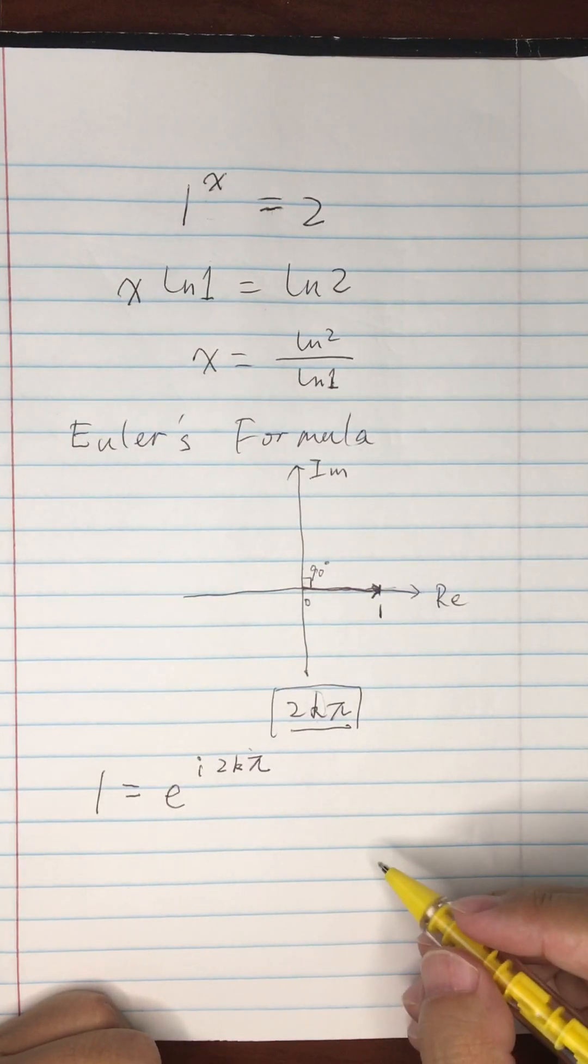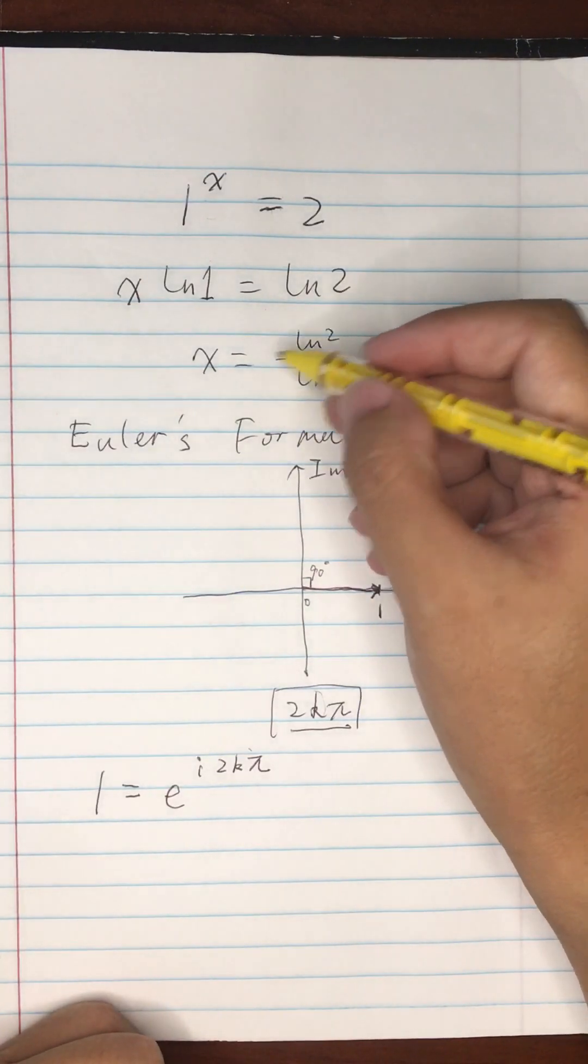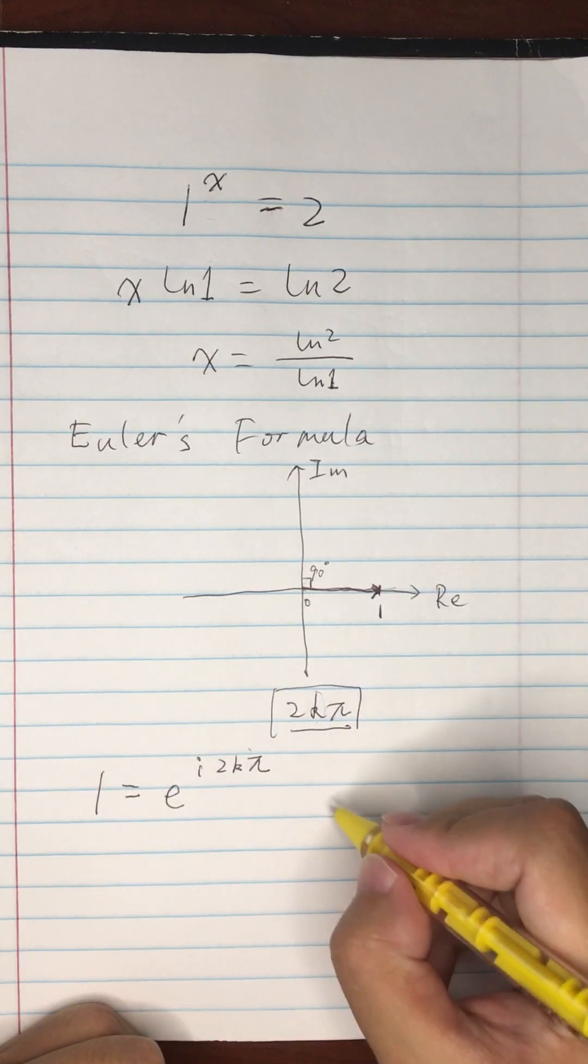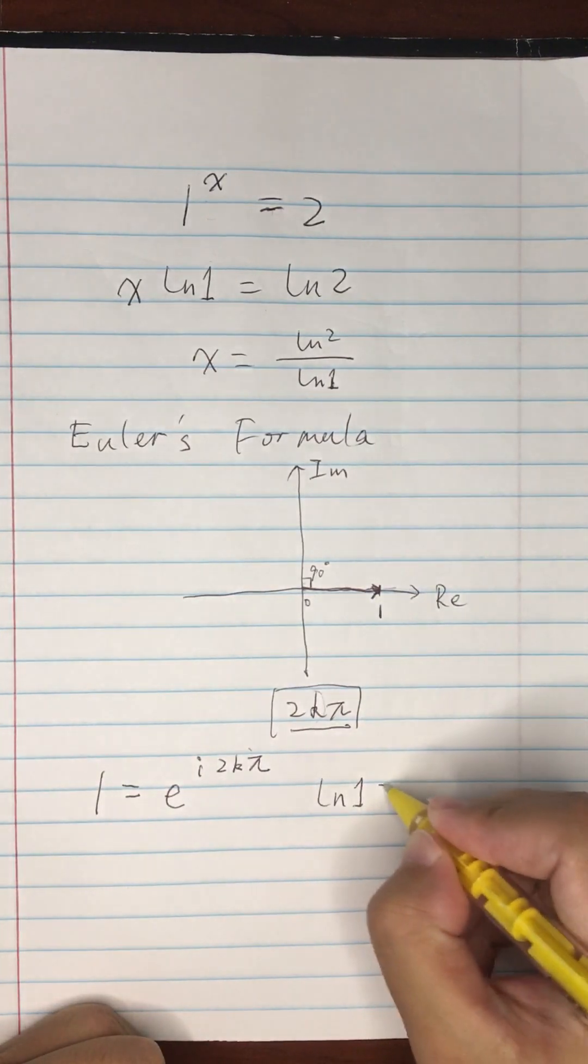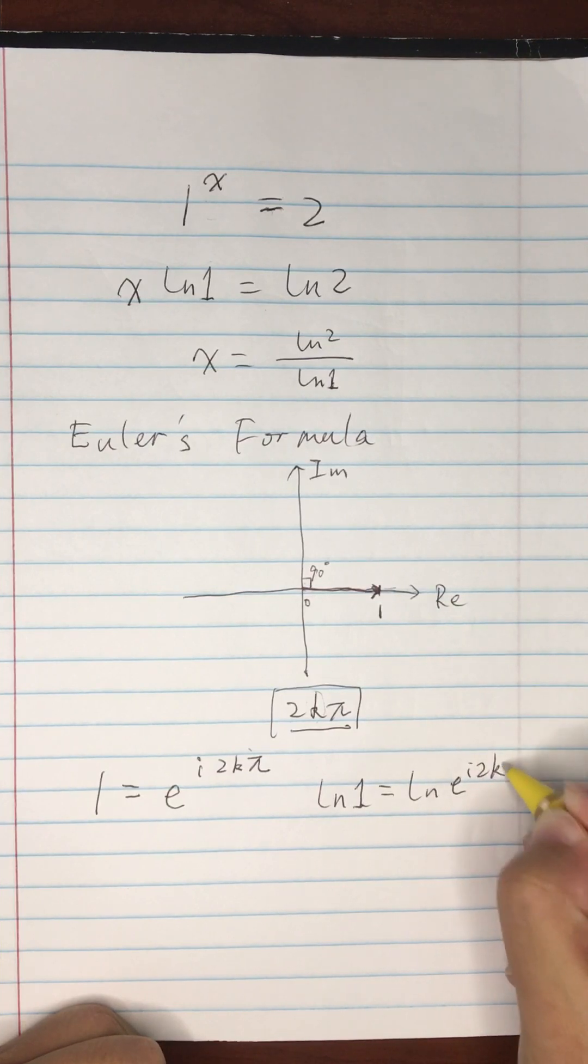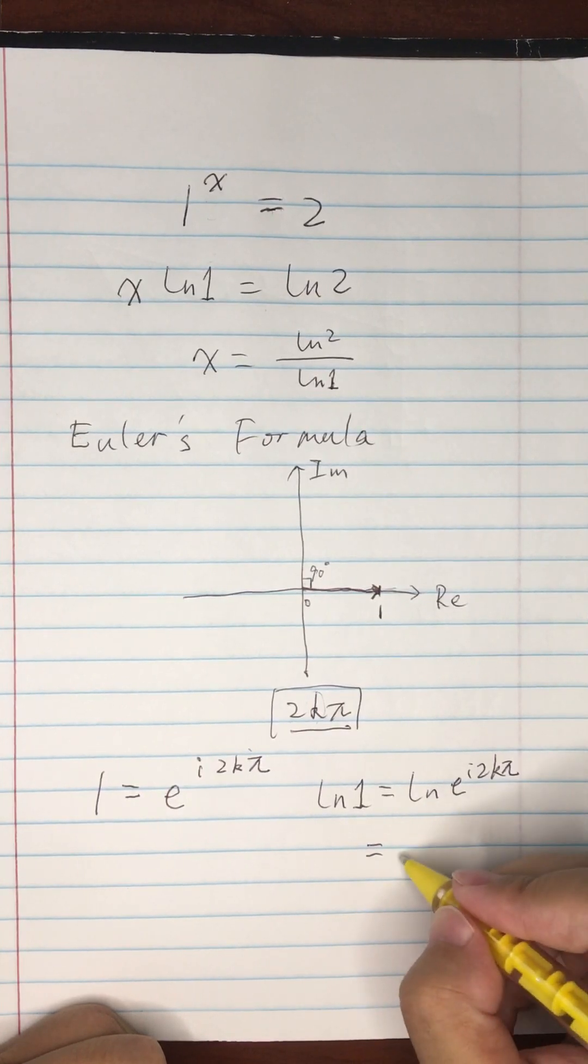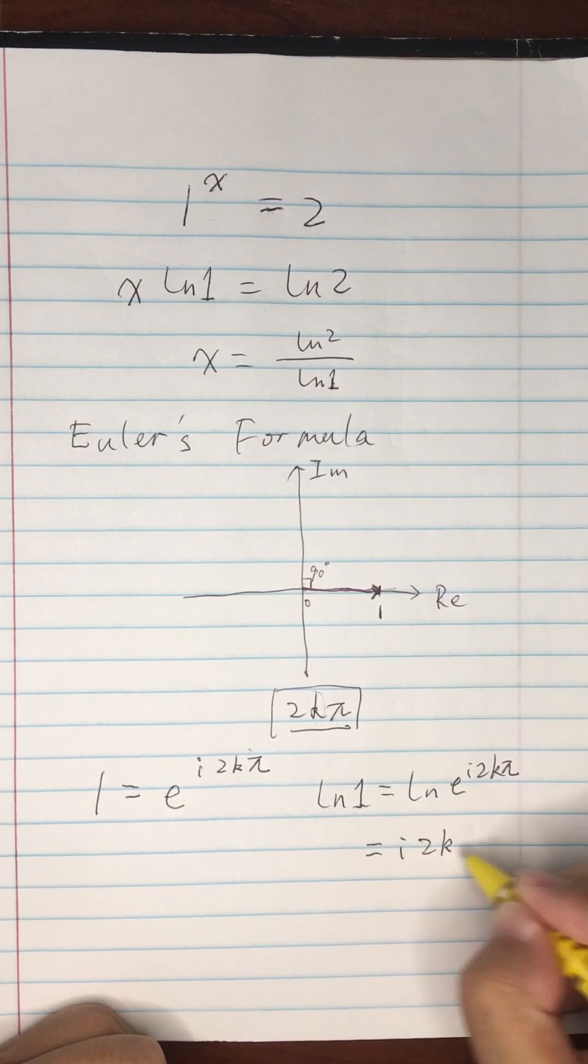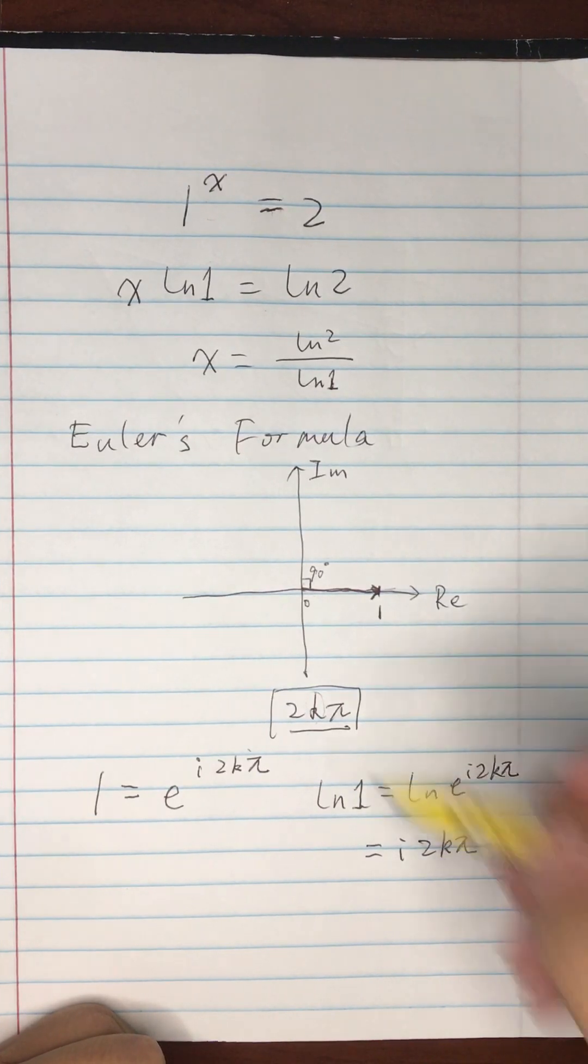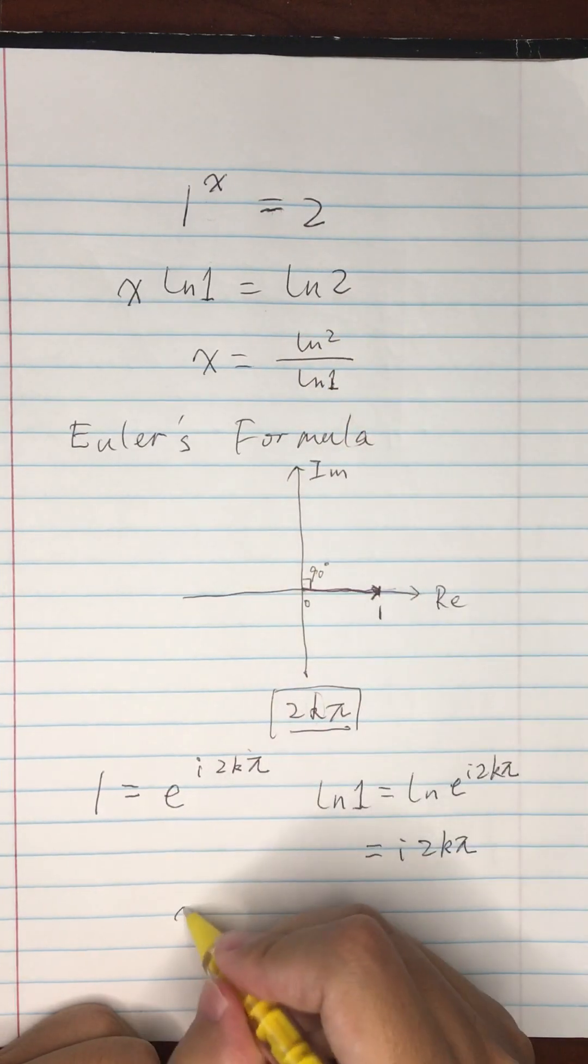Now let's look at the solution. ln(1) is going to equal the natural log of e to the i times 2kπ, and that's going to equal i times 2kπ. Now we can actually bring this expression for ln(1) into our equation.